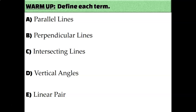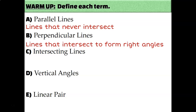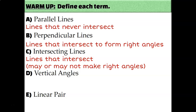The definition of parallel lines is lines that never intersect. The definition of perpendicular lines is lines that intersect to form right angles. And intersecting lines doesn't really have a formal definition — it just means that they intersect, they touch somewhere, they cross at a point, and they may or may not intersect to form right angles.